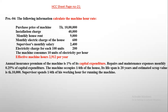A machine is working out for running the machine. Let's write the supervisor at 1 by 4. Electricity charge for each extra unit is 200. Now let's talk about the machine consumption and the monthly electricity charge.